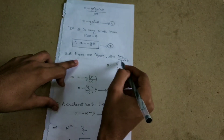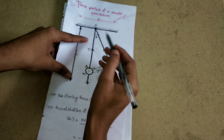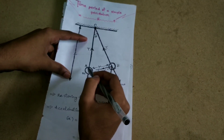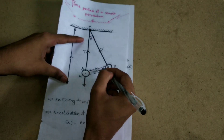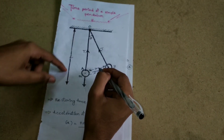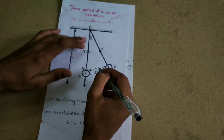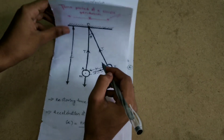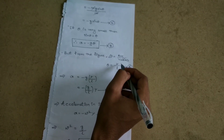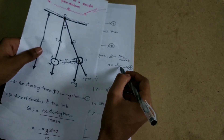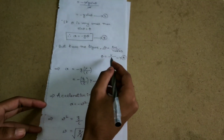From the figure, angle theta equals arc divided by radius. The arc is y and the radius is L, so angle theta equals y divided by L. Therefore, theta equals y by L.